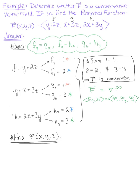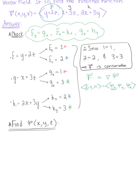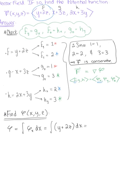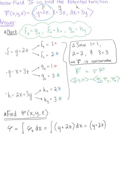Pick your favorite partial derivative and start there. I'm going to start with the partial derivative of phi with respect to x, meaning we integrate with respect to x first. So phi equals the integral of the partial derivative of phi with respect to x dx, which is the integral of (y plus 2z) dx. This integrates to (y plus 2z) times x plus an arbitrary constant function g of y and z. Distributing the x, phi is xy plus 2xz plus g(y, z).